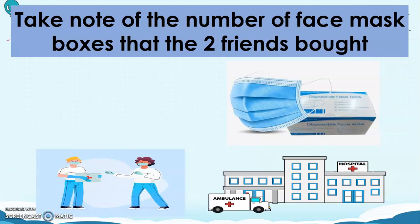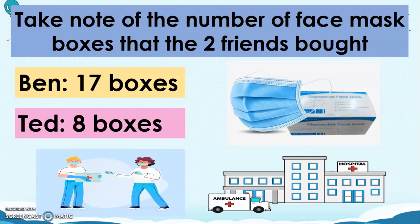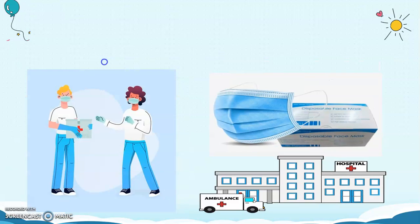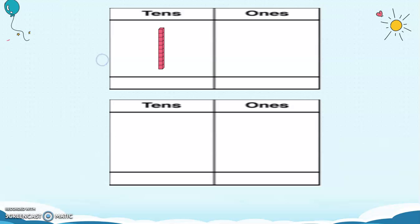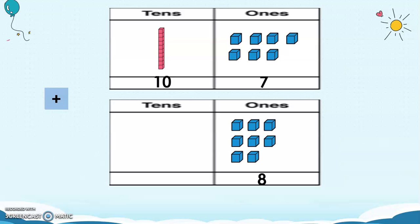Take note of the number of face mask boxes that the two friends bought. For Ben, he bought 17 boxes. For Ted, he bought 8 boxes. To find out the total number of boxes they bought, let us add numbers, but this time with regrouping. So you can see here that we have one rod or 10, and then we have 7 units, so we have 17, plus 8 units.